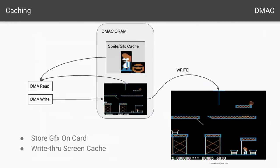Finally, a word on caching. The DMAC card will allow you to cache your graphics on board for quicker access through the DMA engine. In addition, it will provide a write-through cache for screen memory. Any writes will get written to both the internal RAM as well as DMA'd out to system RAM, but reads will come from the internal sprite and graphics cache and the internal copy of the screen memory. Of course, for this to work correctly there can't be any other devices DMA'ing into graphics memory, and you can't write to memory yourself with the processor.